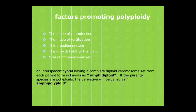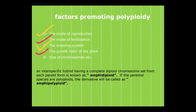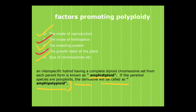What are the factors that promote polyploidy? These include the mode of reproduction, mode of fertilization, the breeding system, the growth habit of the plant, and the size of chromosomes. An interspecific hybrid having a complete diploid chromosome set from each parent is known as an amphidiploid, just like Raphano brassica. If the parental species are polyploid, the derivatives will be called amphipolyploids.